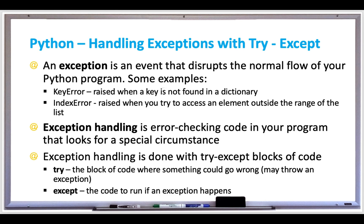When this happens your program crashes and it doesn't execute any more statements that follow. By using exception handling — which is error checking code in your program — it looks for this special type of circumstance, prevents your program from crashing, and lets your program continue normally. Exception handling is done with try/except blocks of code.